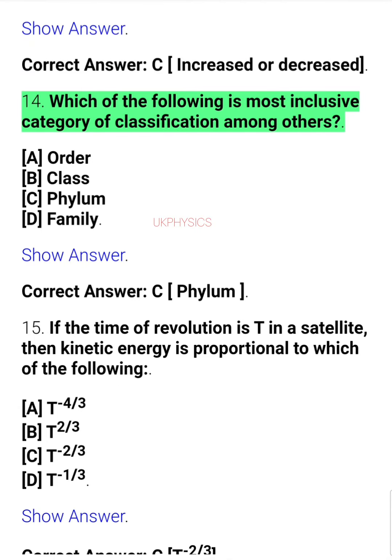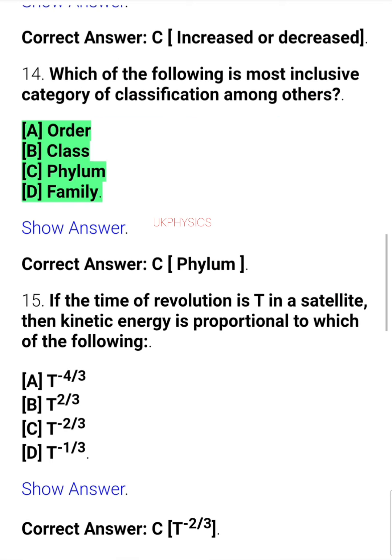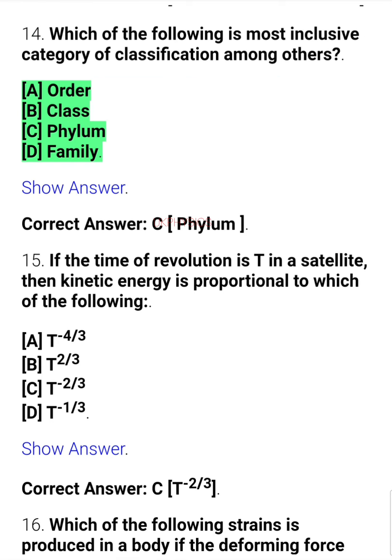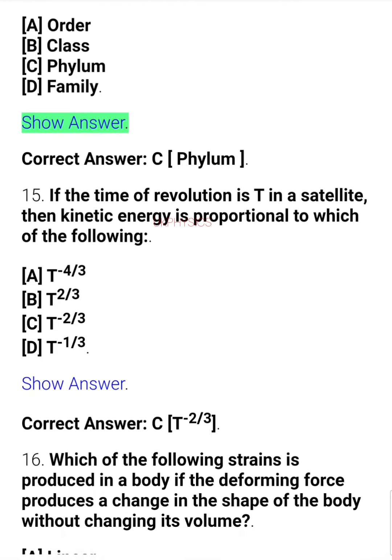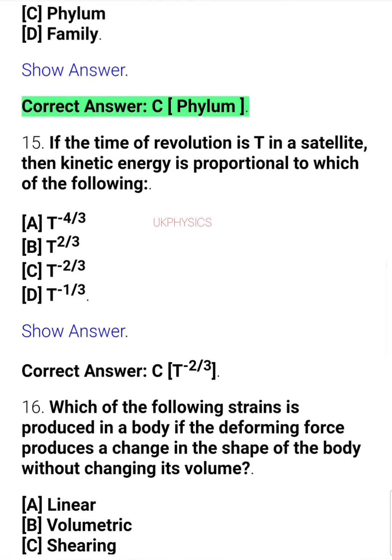Question 14. Which of the following is the most inclusive category of classification among others? A. Order, B. Class, C. Phylum, D. Family. Correct answer: C. Phylum.